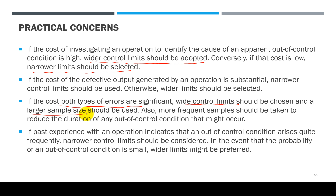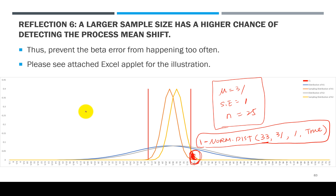If past experience with an operation indicates that an out-of-control condition arrives quite frequently, wider control limits should be considered. In the event that the probability of an out-of-control condition is small, wider limits might be preferred. So I think that kind of concludes chapter 8. I hope you have a thorough understanding of what we have learned. It is actually a very smart technique that can help you detect some of the problems arising from your manufacturing or service processes. Good luck, and all these six different reflections should be able to help you figure out the second-to-last questions in homework number 5.